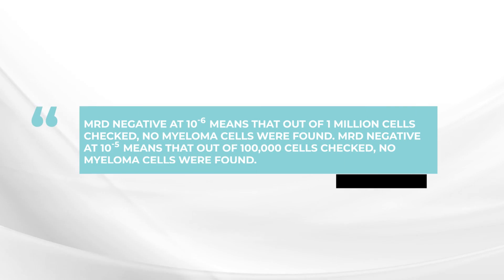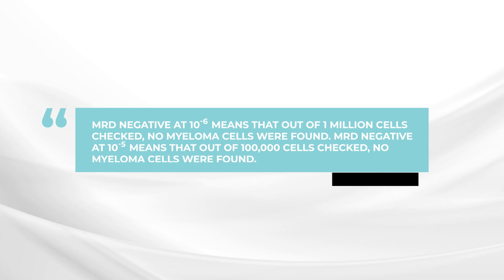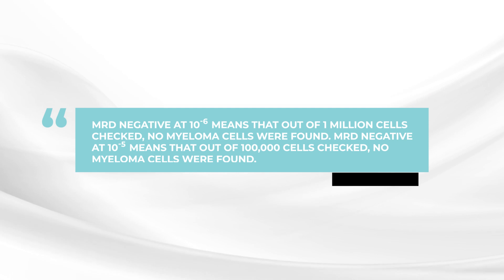If you put through 100,000 cells and no myeloma is found, then this is called negative at 10 to the minus 5. 10 to the minus 5 cells checked, no myeloma found.